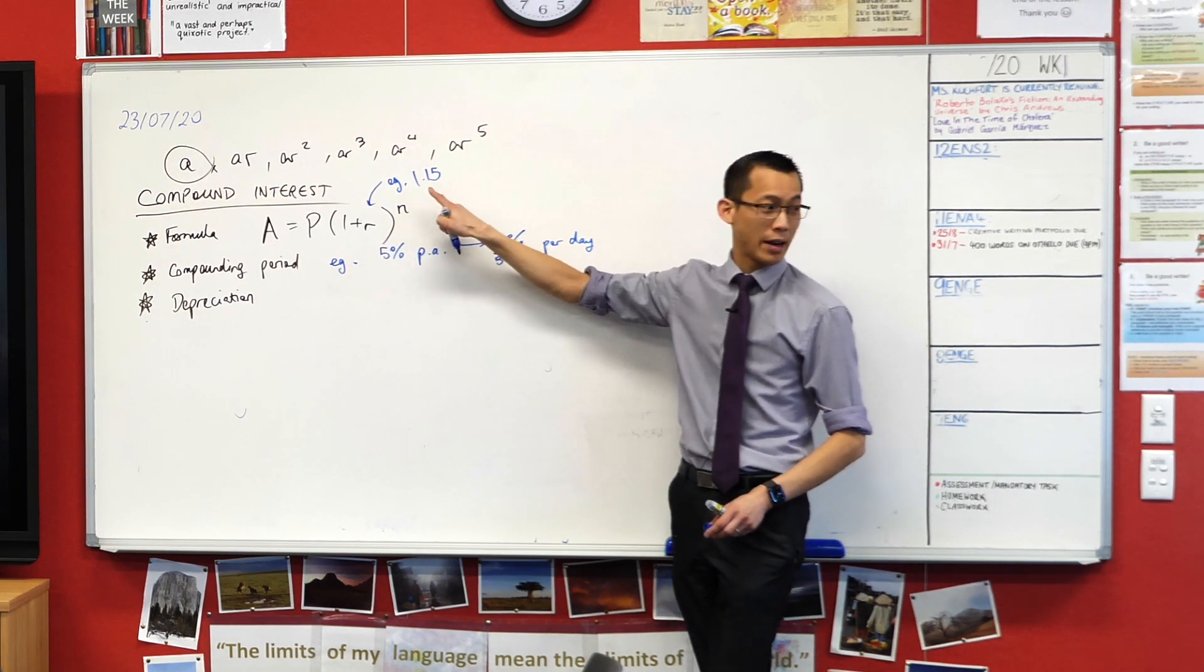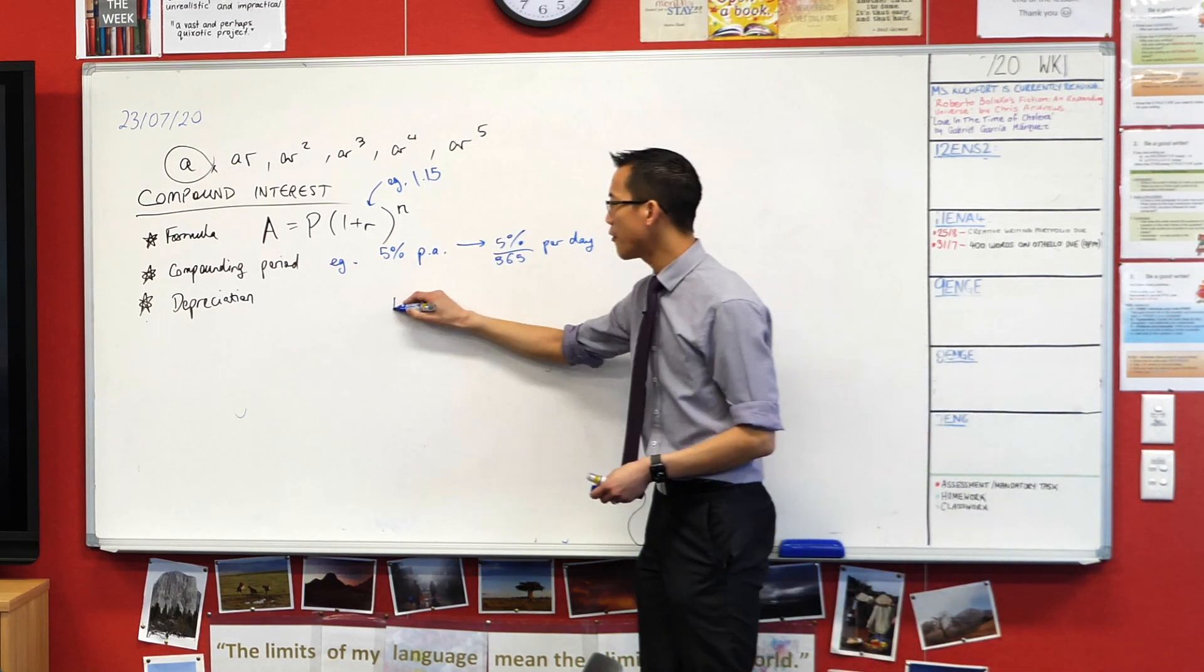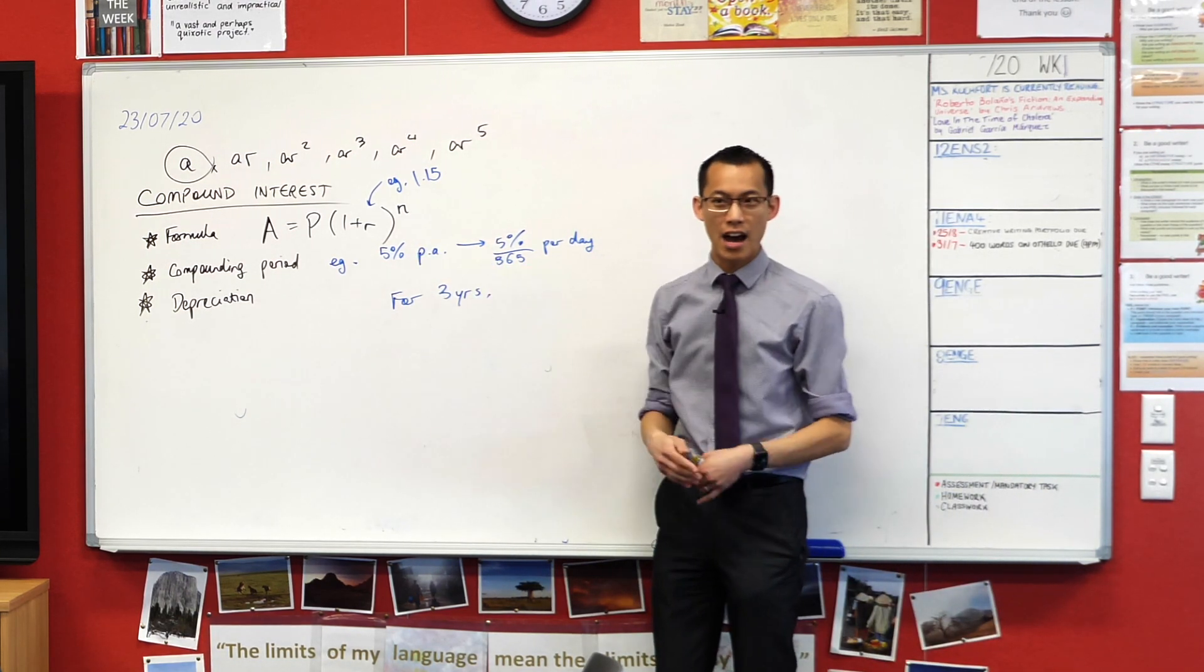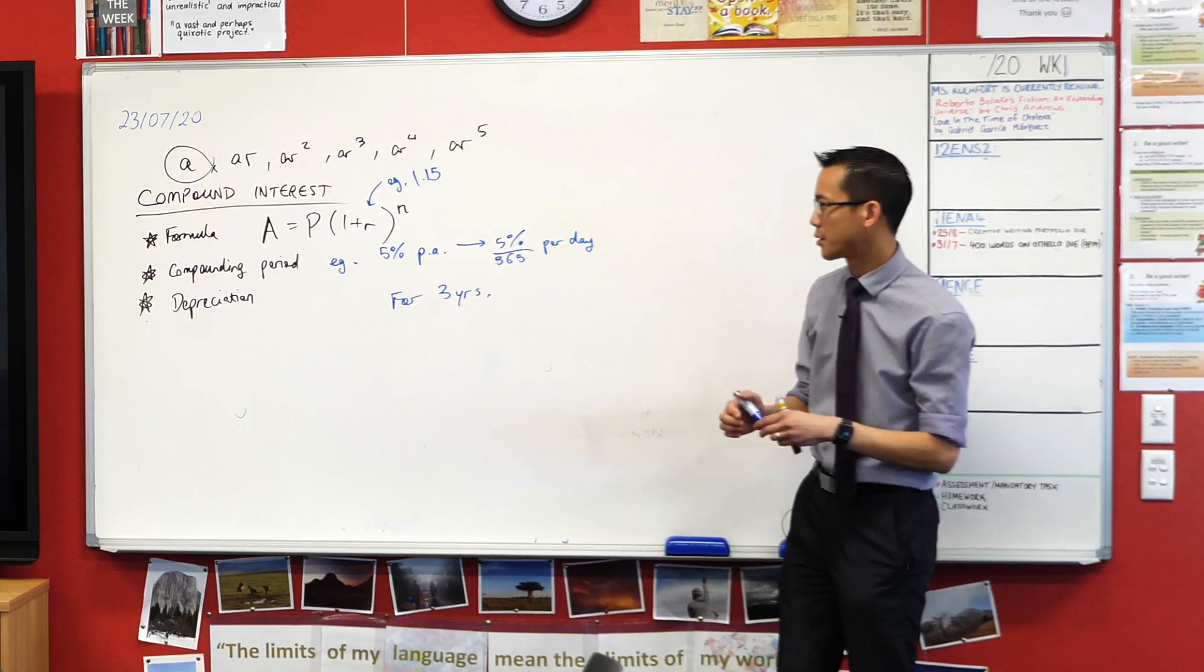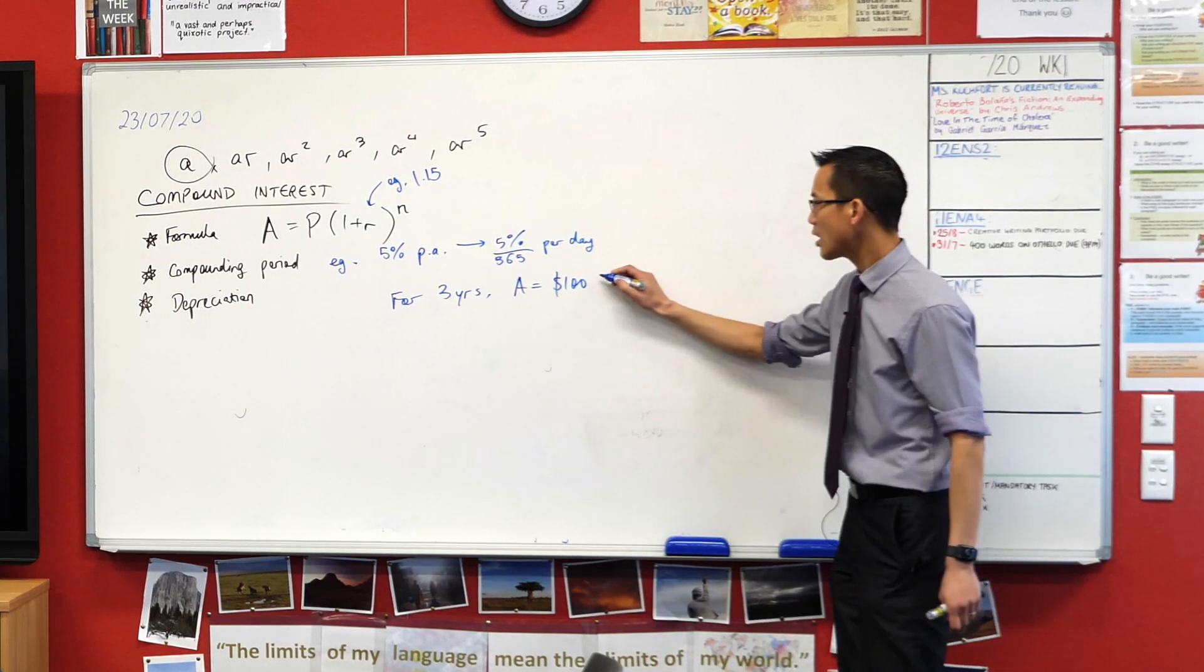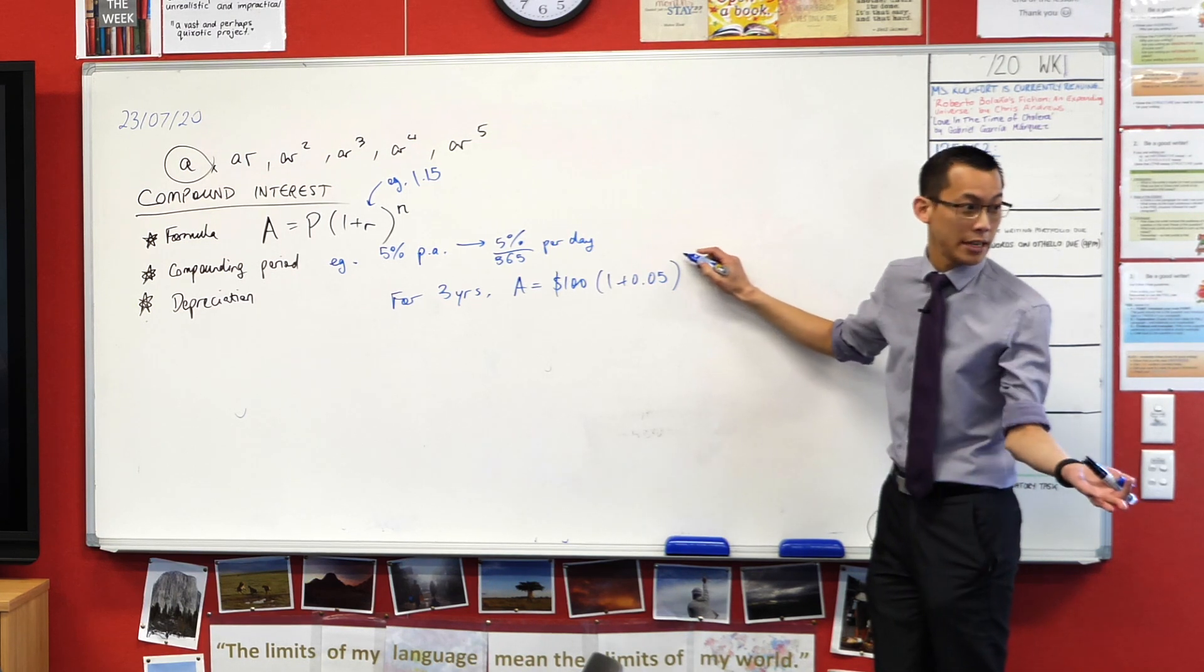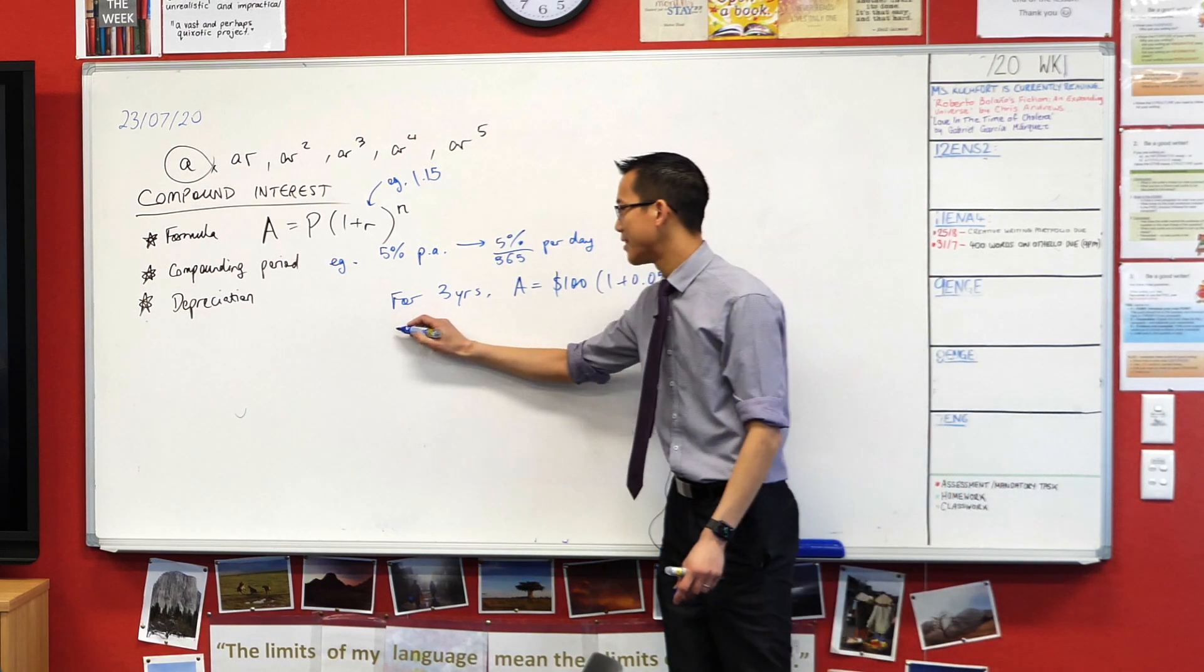We have to take this 5%. You don't get 5% every single day - you get a small share of that 5%, which is 5% divided by 365 per day. This is important because it's going to affect what our R is and also what our N is.